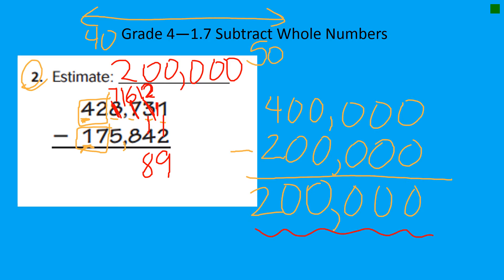Instead of 6 hundreds, now we have 16 hundreds. So let's see. 16 minus 8. Oh, that's a doubles fact. 16 minus 8 is 8 because I know 8 plus 8 is 16.